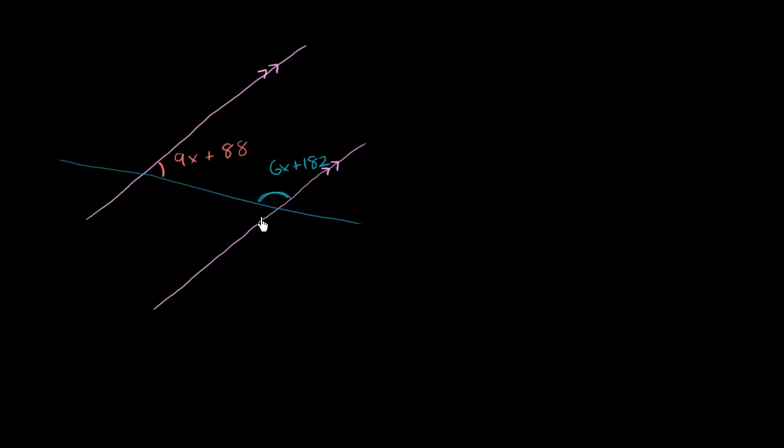Well, the key here to realize is that these right over here are related by the fact that they're formed from a transversal intersecting parallel lines. And we know, for example, that this angle corresponds to this angle right over here. They're going to be congruent angles.